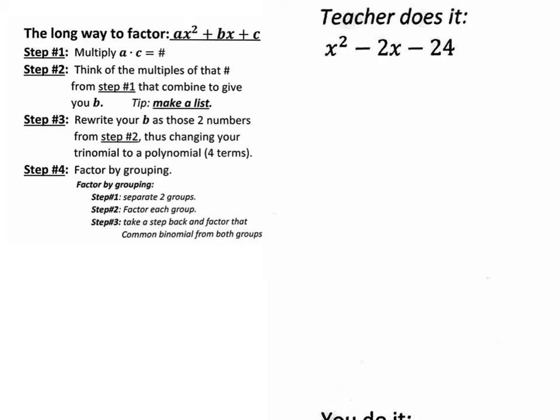So it says right here, step 1 is to multiply a times c. So everybody should write down 1, and then put a times c. And remember, your a value in this case is 1, your b value is negative 2, and your c value is negative 24.